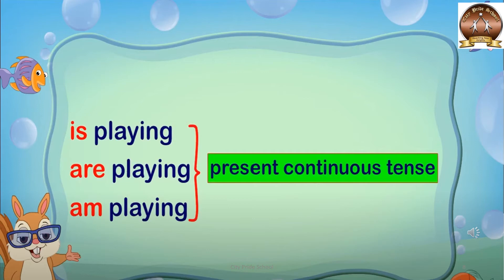You can use these words in sentences like this. 'Ram is playing football.' 'Children are playing football.' And with 'am': 'I am playing football.' So in this chapter, present continuous tense means the action which is going on, which is not completed, which is going on now. The rule is: we use helping verb, main verb, and ing form.